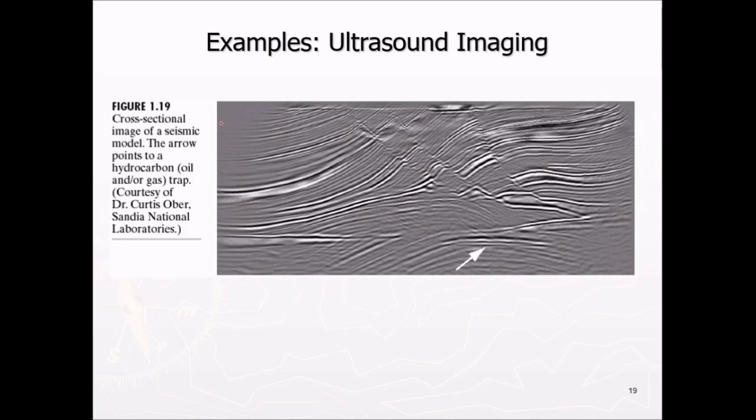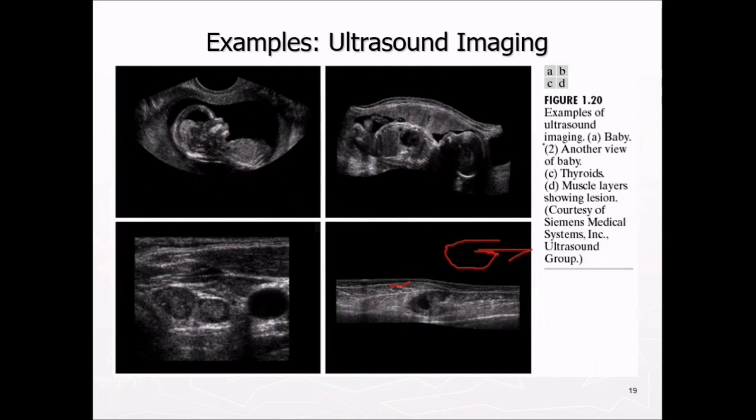This is ultrasound imaging. This particular example is the cross-sectional image of seismic model. This arrow particular points to a hydrocarbon or oil or gas trap. Then this is a baby, finding through ultrasonic imaging. We call it ultrasound. And this is another view of baby. These are thyroids. These are muscular layers showing lesions in between.